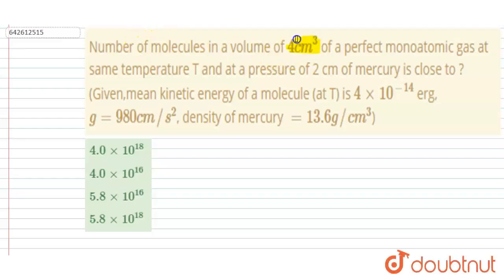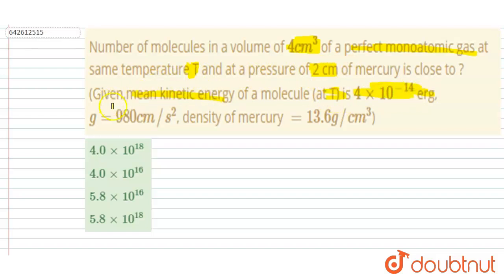Hello everyone. The problem is: find the number of moles in a volume of 4 centimeter cube of a perfect monatomic gas at some temperature T and at a pressure of 2 centimeter of mercury. The mean kinetic energy of the molecule at temperature T is given, along with the gravitational acceleration and the mercury density.